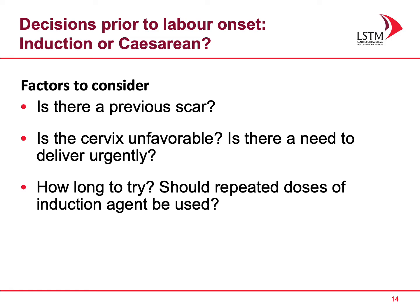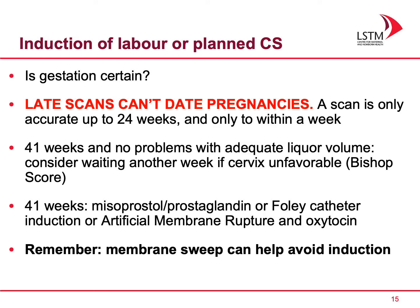If a decision is made to deliver a woman prior to the onset of labour, you need to know how best to achieve this — whether by induction of labour or caesarean section. Things that need to be considered are: is there a previous scar, is the cervix favourable or unfavourable, and is there a need to deliver urgently? In terms of induction of labour, how long should you try, and should repeated doses of the induction agent be used? Also consider whether the gestation is certain — remember, late scans cannot date a pregnancy. A scan is only accurate up to 24 weeks for dating purposes.